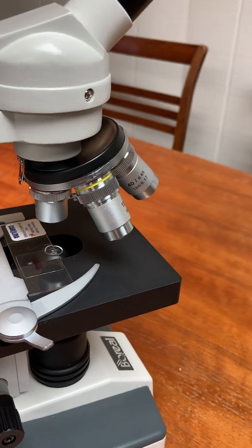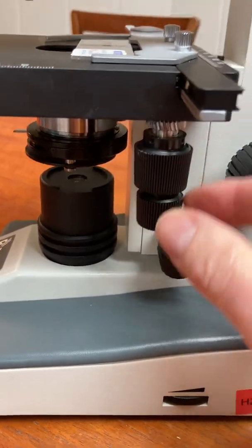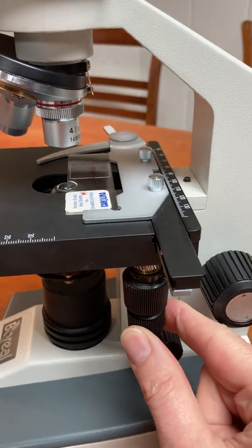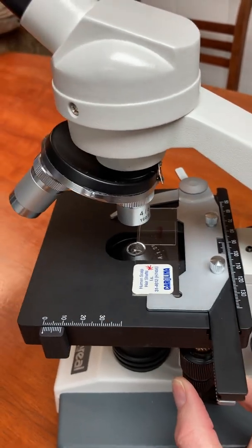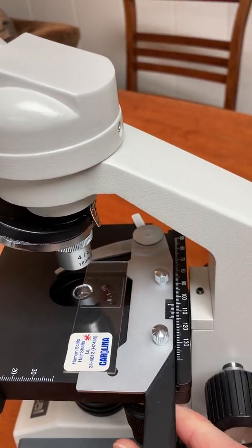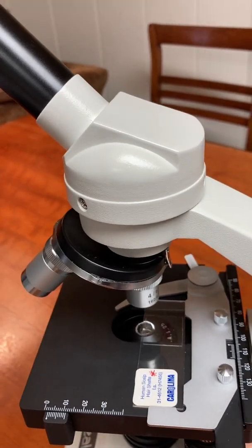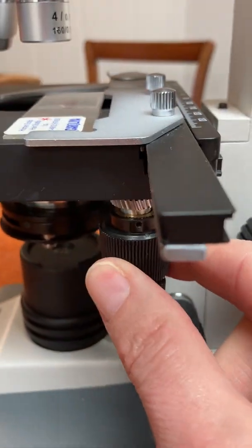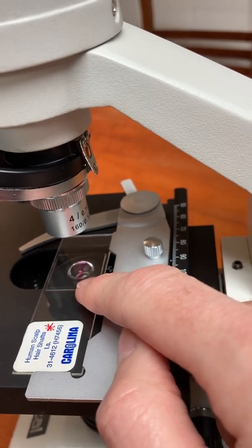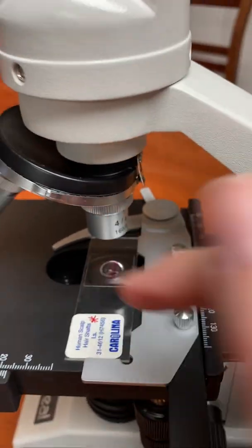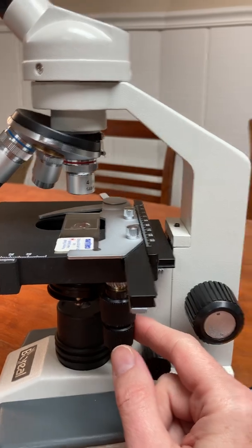The stage control knobs are on the other side. Here they are. There are two here and here. One of them, when you turn it, moves the microscope slide back and forth in that direction. So you would want to line up your specimen, which is here, with the lamp that's there. And then this other knob underneath moves it in the other plane. So look how I lined up the microscope slide specimen there right on top of the lamp shining through. So these are stage control knobs because they control the stage, right?